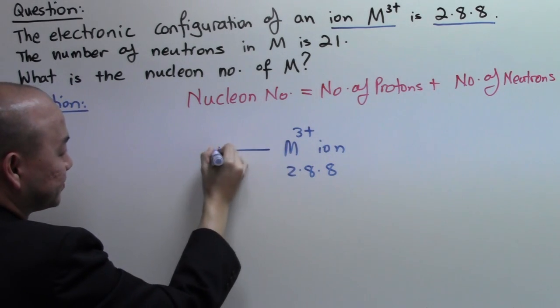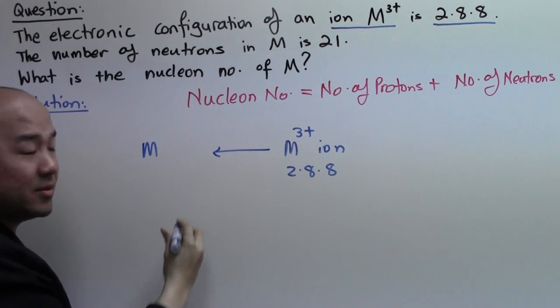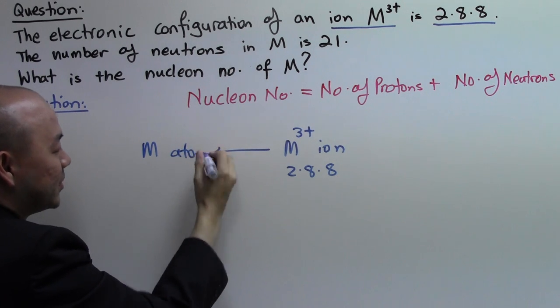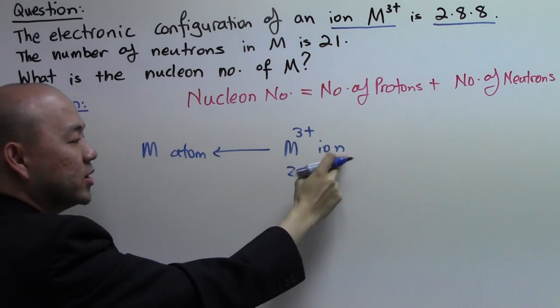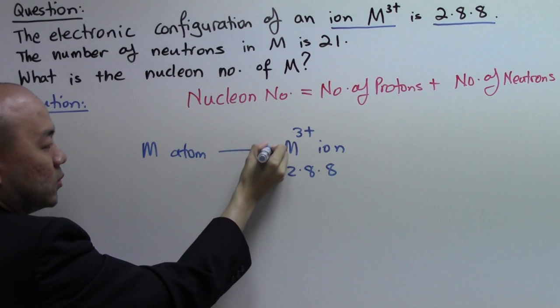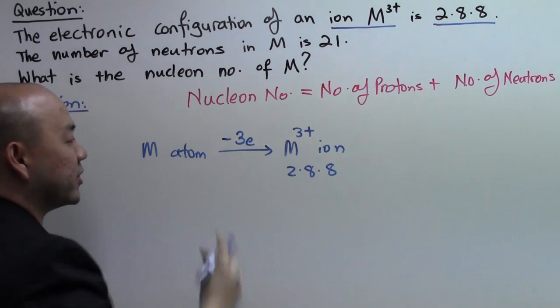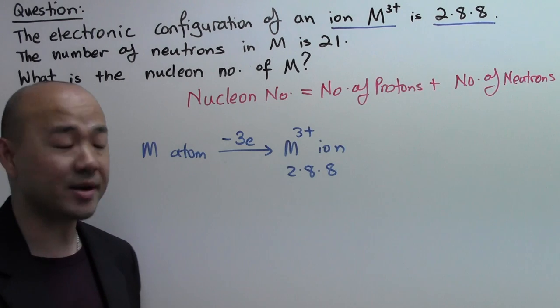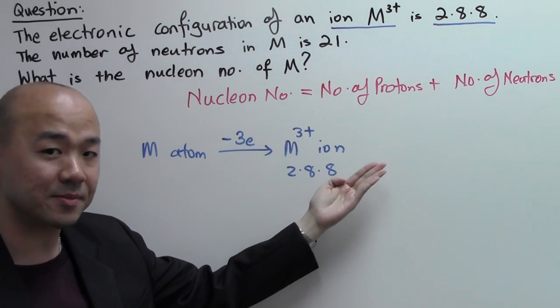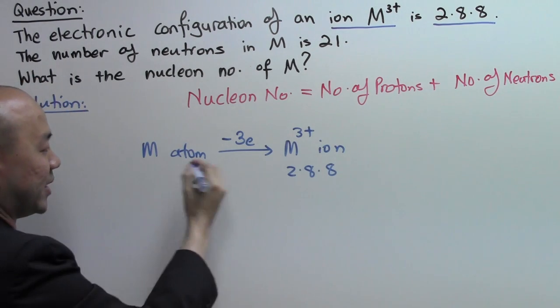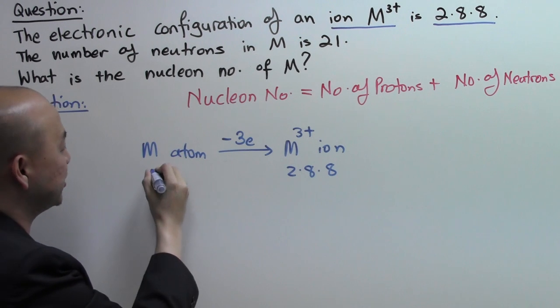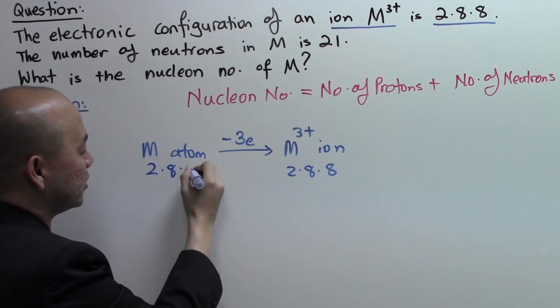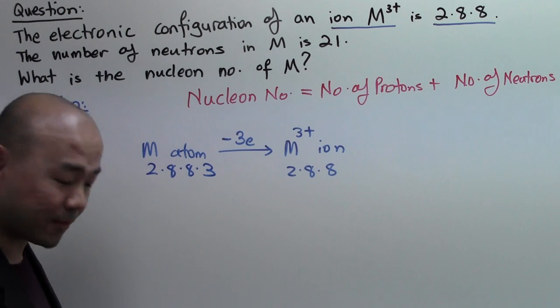If you work backwards, M will then be the M atom. And when M atom wants to form M3+ ions, what you must do is to give away three valence electrons in order to form M3+ ions. So if you work backwards and track it back, you realize the electronic configuration will be 2.8.8.3.